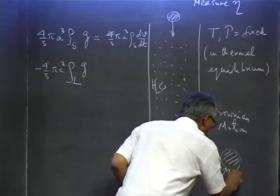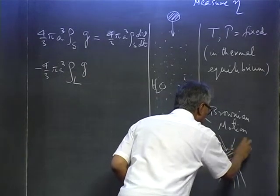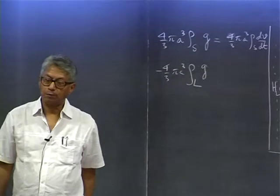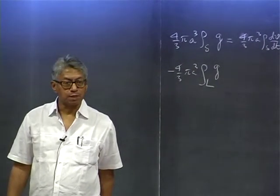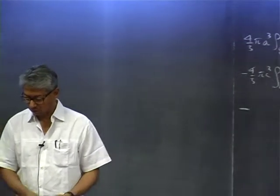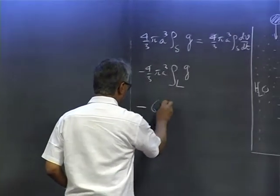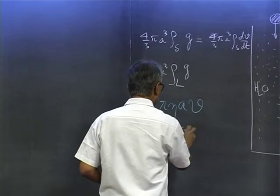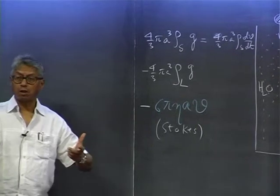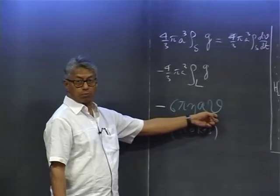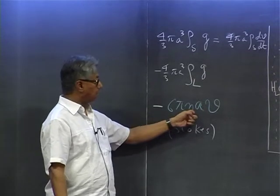The water molecules will bombard the ball. As the ball moves down it will encounter collisions from the surrounding water molecules, and there will be more collisions from the front than from the back, just because it is going down. As a result, there is an upward force on the ball — that force is what is called the viscous force. This is Stokes' law: the force opposing the motion of the ball is proportional to the instantaneous velocity of the ball, as well as to the radius of the ball and the viscosity of the water.